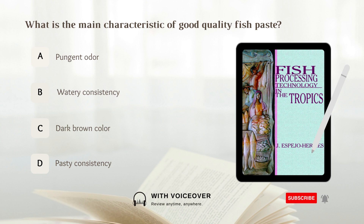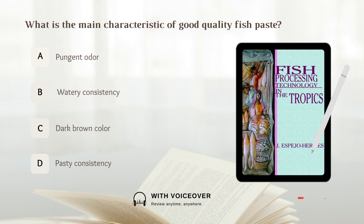What is the main characteristic of good quality fish paste? A. Pungent odor. B. Watery consistency. C. Dark brown color. D. Pastey consistency. Answer: D. Pastey consistency.